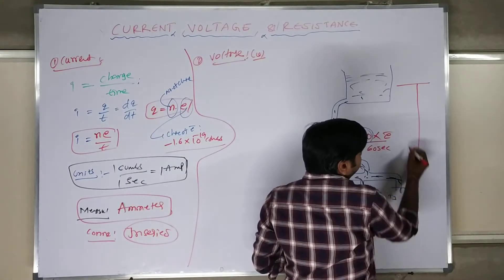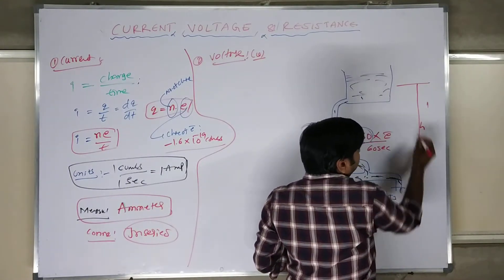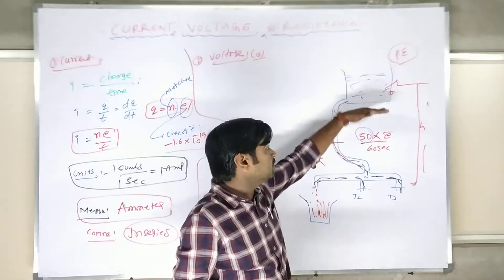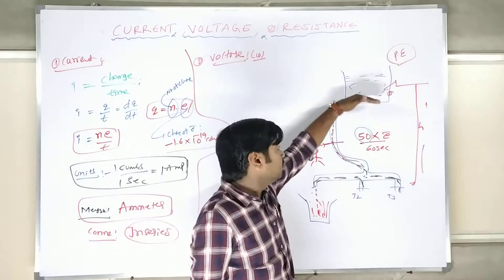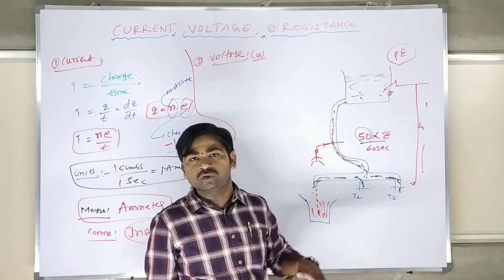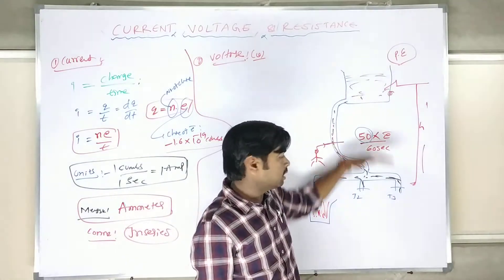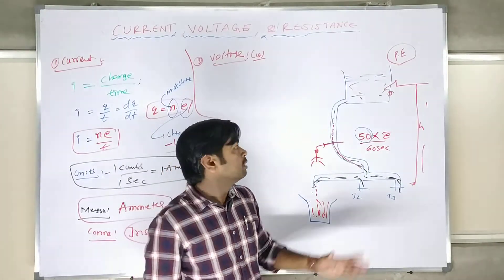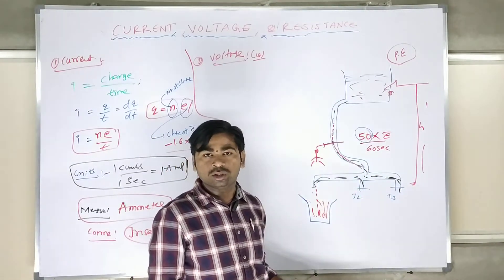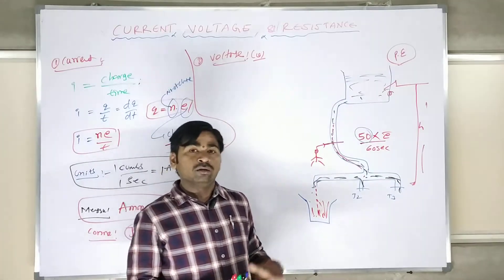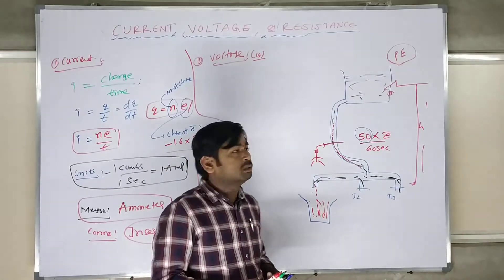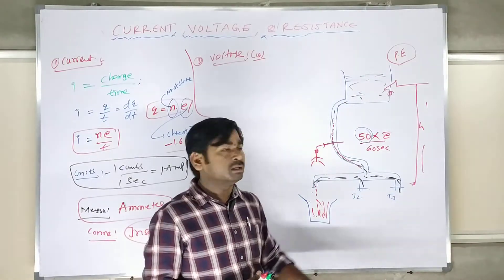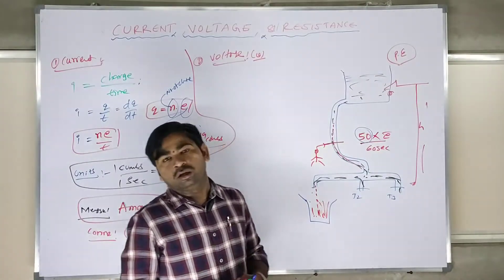The water at height has some mass, which gives it potential energy. Due to that potential energy — that pressure — the water flows. Some force is required to send the water from one place to another, and some work has to be done. The force required to move the water from one place to another is analogous to voltage.